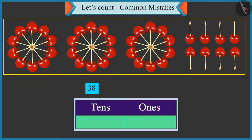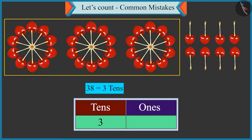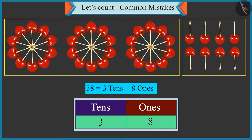Oh, yes. Three tens means three will come in the box of tens and there are eight single cherries, so eight will come in the box of ones.